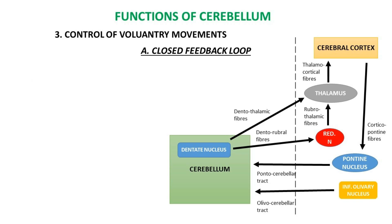The closed feedback loop is formed by fibers from the cerebral motor cortex to the paravermal cerebellum and back to the cerebral motor cortex. The efferent limb is formed by collaterals of the corticospinal tract, which make synapses with ipsilateral pontine nuclei, inferior olivary nuclei, and contralateral reticular nuclei. Pontocerebellar fibers from pontine nuclei and olivocerebellar fibers from the inferior olivary nucleus reach the contralateral cerebellar cortex, while reticulocerebellar fibers from the lateral reticular nucleus project to the ipsilateral cortex. All these fibers connect to the paravermal area of the cerebellar hemisphere.